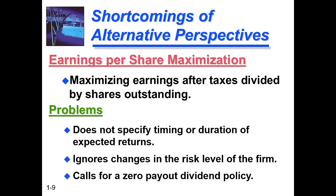The third shortcoming of EPS maximization is that it calls for a zero payout dividend policy, which is not beneficial in the long term. Shareholders are not attracted because they need dividends as a form of return. If they don't get dividends and there is a zero dividend payout policy, then definitely in the long term, the shareholders' wealth maximization will be compromised.